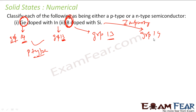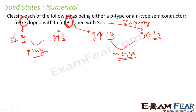Since group 13 (boron) is being doped with a higher group element (silicon, group 14), we will have more free electrons — not holes. So it will be n-type because it has extra electrons. Note that silicon is not the main element here; boron is. Doping with silicon, which is from a higher group, results in more free electrons, making it n-type.